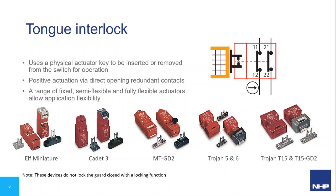The MTGD2 has strong metal construction and is versatile for most applications, using a larger industry-standard DIN or EN50041 fixing centre. These first styles have removable and rotatable heads providing eight possible actuator entry points and also offer a GD2 reinforced actuator entry slot for more demanding applications. The Trojan 5, 6, and T15 switches feature dual key entry slots and rotatable heads, offering four actuator entry options. Note: these tongue interlock devices do not lock the guard closed — they only check whether the guard is open or closed. They don't prevent the guard from opening.